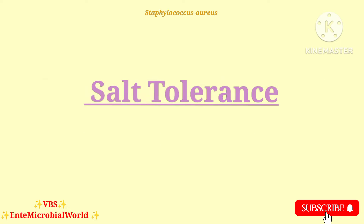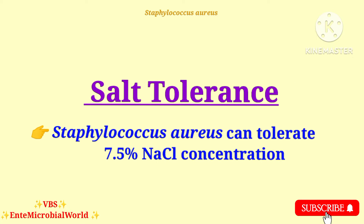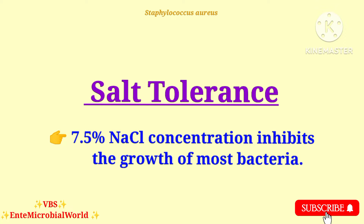Next one is salt tolerance. Staphylococcus aureus can tolerate high salt concentration, that is, it can tolerate 7.5% sodium chloride concentration. This concentration inhibits the growth of most bacteria.